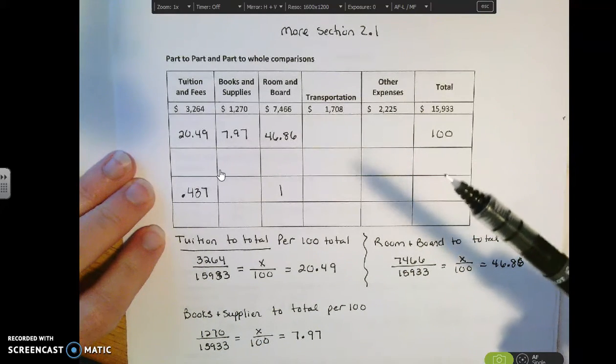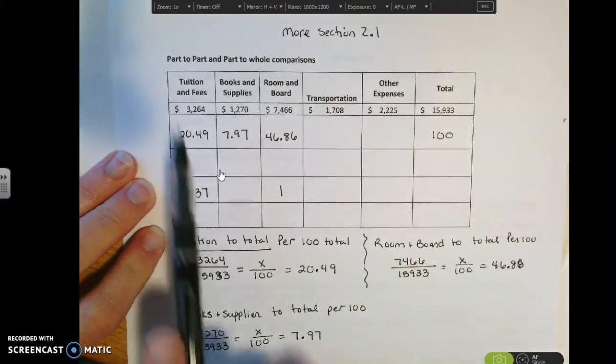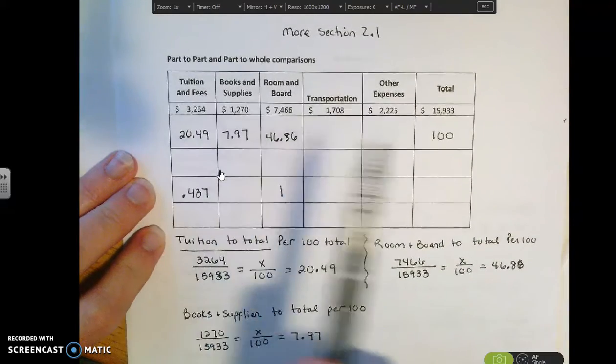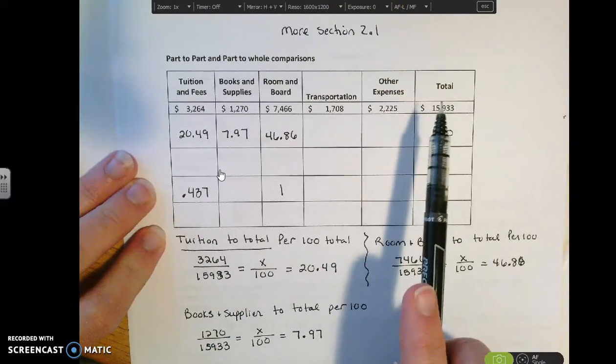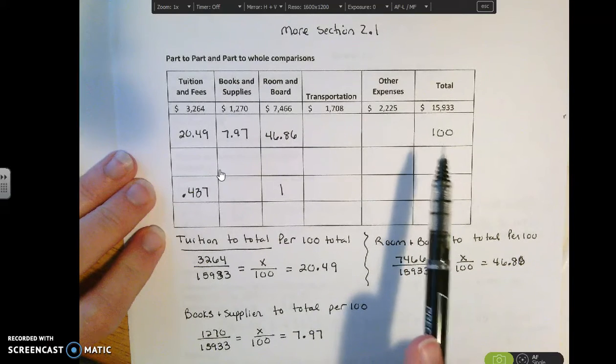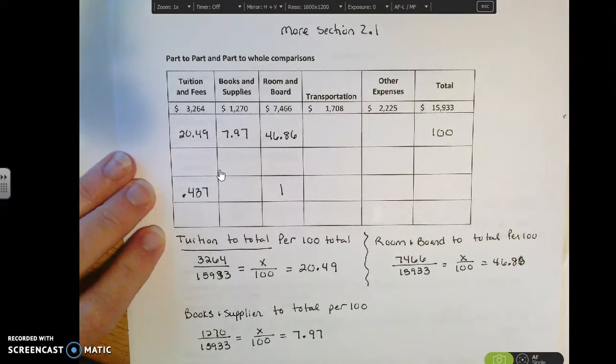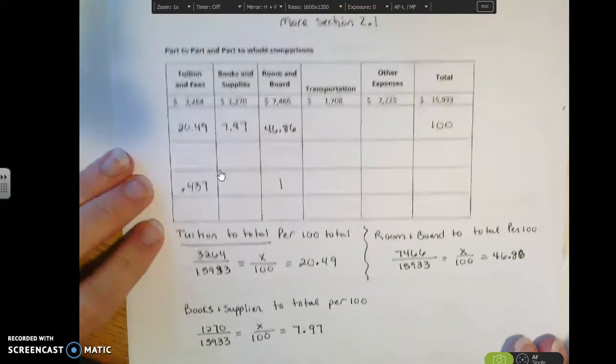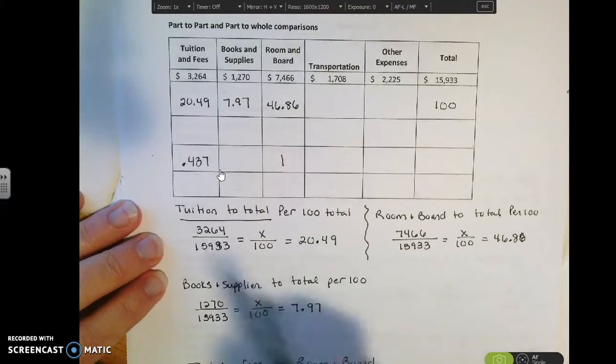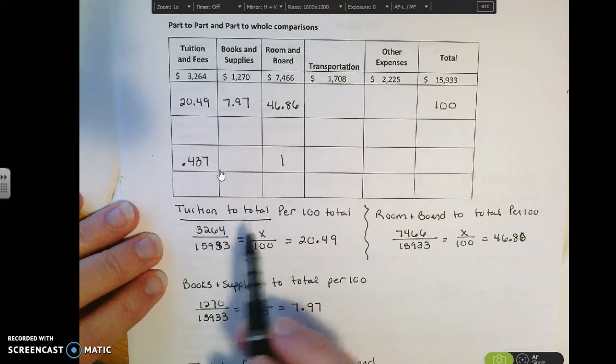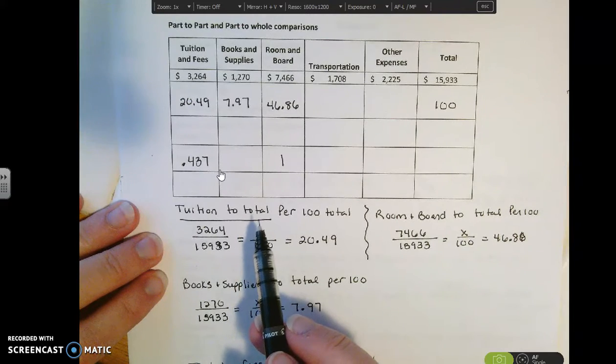So if I wanted to compare how much tuition and fees I paid to the total cost, we have to have some comparison value. So 100 is usually a very common term because percents are 100. So what I want to do is I want to compare tuition and fees to the total cost.